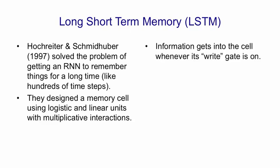Information gets into the memory cell whenever a logistic write gate is turned on. The rest of the recurrent network determines the state of that write gate, and when the rest of the recurrent network wants information to be stored, it turns the write gate on, and whatever the current input from the rest of the net to the memory cell is gets stored in the memory cell.